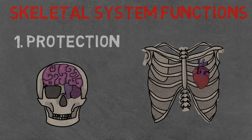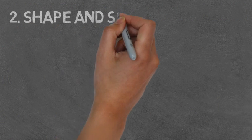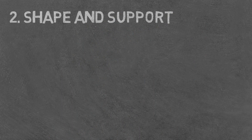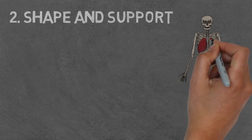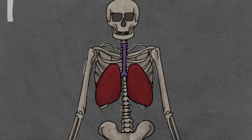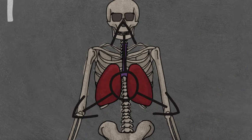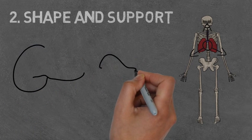Shape and support. The skeleton is the body's framework, holding our vital organs in place, not allowing them to move freely around our body. Without the skeleton, we would not have a posture and therefore look like a big blob, making movement really hard.